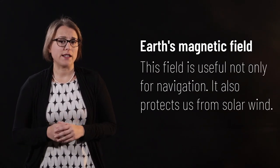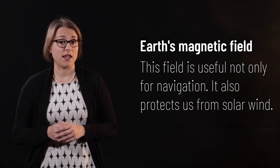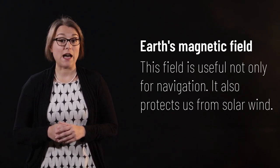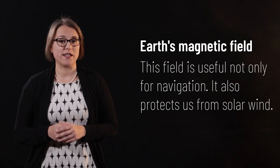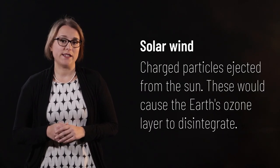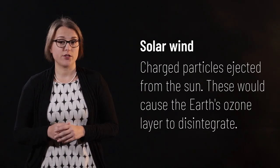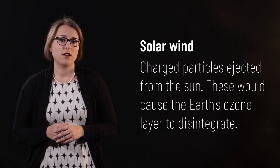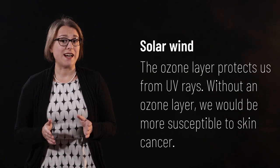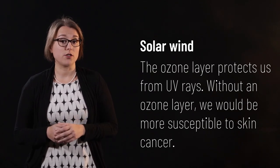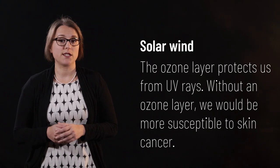Not only does this magnetic field allow us to navigate by use of compass, but it also protects the inhabitants of our planet from solar winds. Solar wind consists of charged particles emitted from the Sun that would cause the Earth's ozone layer to disintegrate. Without an ozone layer, we would not be protected from the Sun's harmful UV rays and would become more susceptible to skin cancer. The Earth's magnetic field deflects the solar wind, and while doing so generates spectacular aurora in the process.